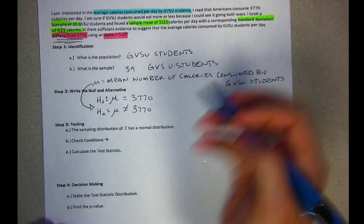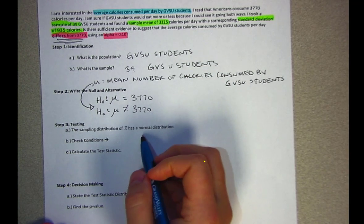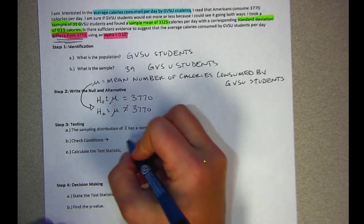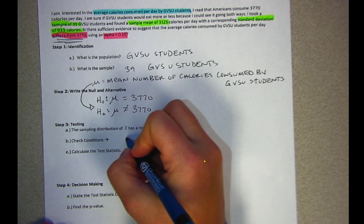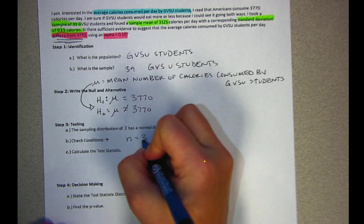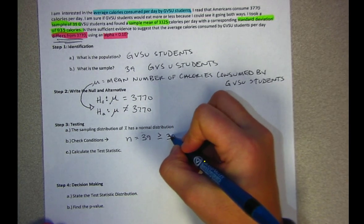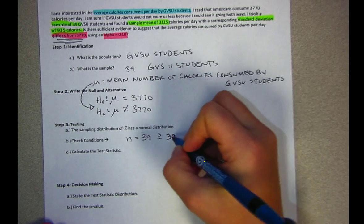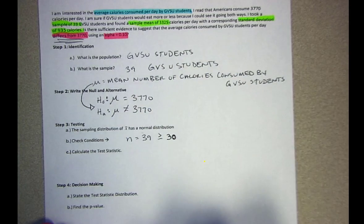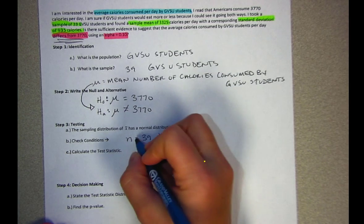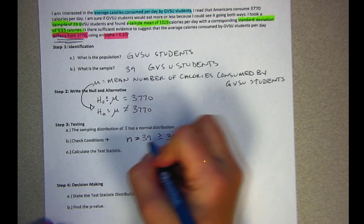In the testing phase we're making the assumption that the sampling distribution of X-bar has a normal distribution. To check that we're going to check it based on conditions. We have n equal to 39 which is large. We're going to assume there are no outliers, so a sample size of 39 would be sufficient to assume that the sampling distribution of X-bar has a normal distribution. This wouldn't be large enough if you had significant outliers.